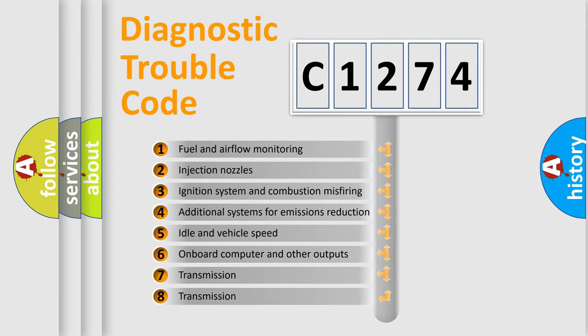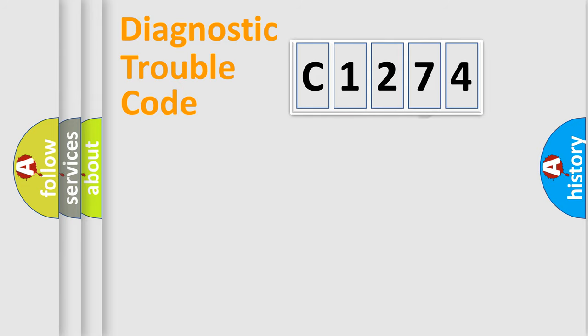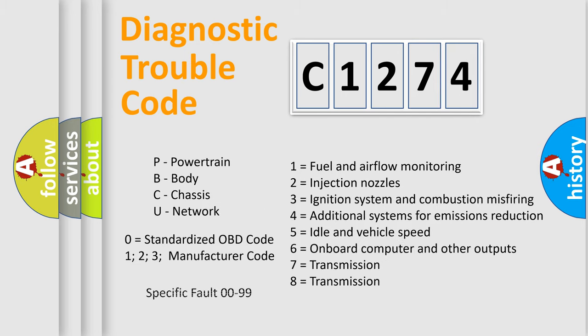The third character specifies a subset of errors. The distribution shown is valid only for the standardized DTC code. Only the last two characters define the specific fault of the group. Let's not forget that such a division is valid only if the second character code is expressed by the number zero.